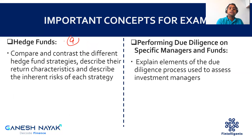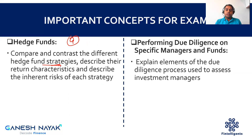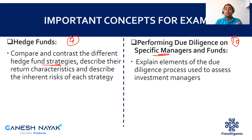Chapter nine on hedge funds is primarily theory — don't worry too much about it; you can read it two or three times before the exam. The major focus is on strategies, which is connected to your Level 1 content. Chapter ten on performance due diligence covers what checks to do when picking a fund manager. It is also mostly theory-driven, but I've highlighted one important learning objective which can get tested as a case study or a larger theoretical question.